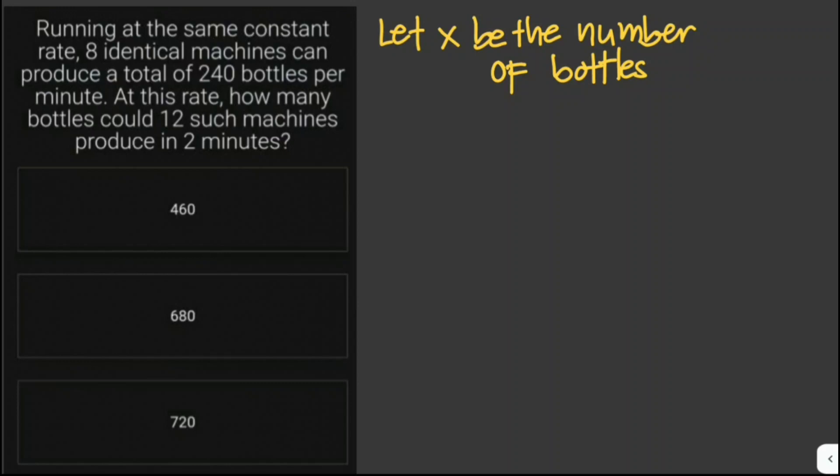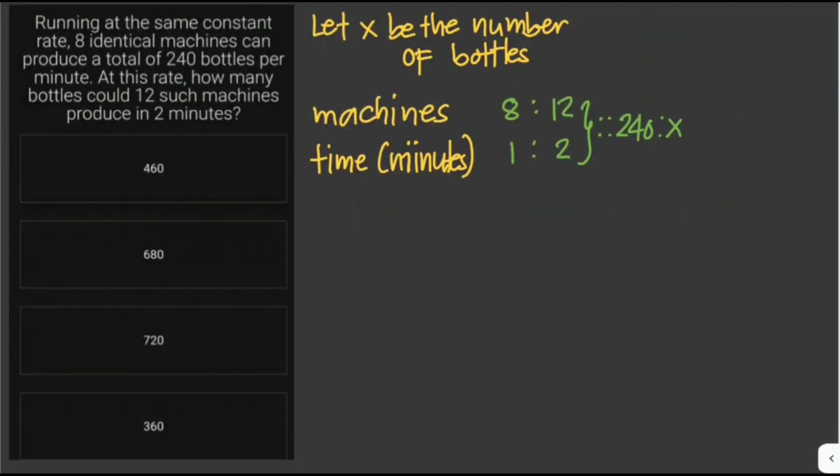So for the machines, first we have 8 identical machines, then the second one, we have 12 identical machines. Then for the time in minutes, those 8 identical machines produce a total of 240 bottles per minute, so 1 minute, and then the 12 machines in 2 minutes.